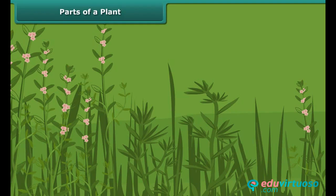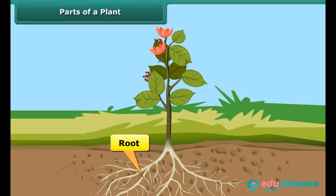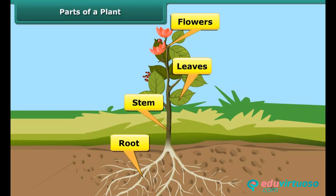A plant body has four main parts: root, stem, leaves, and flowers, with each part performing a specific function. Let us look at the roots and stems in greater detail.